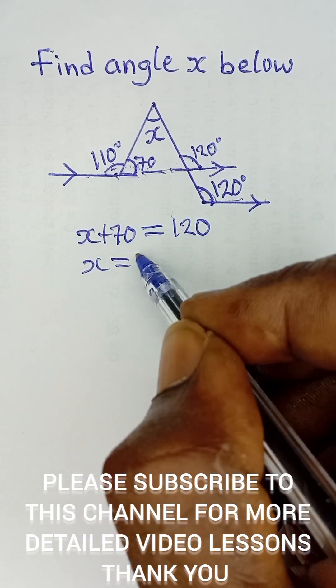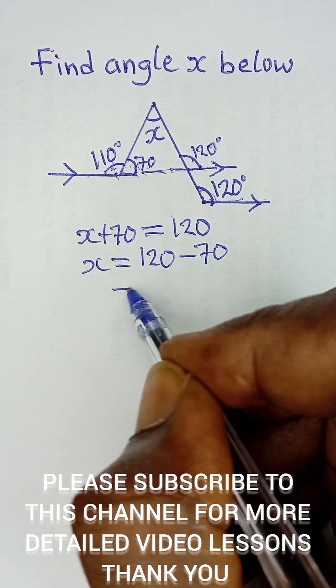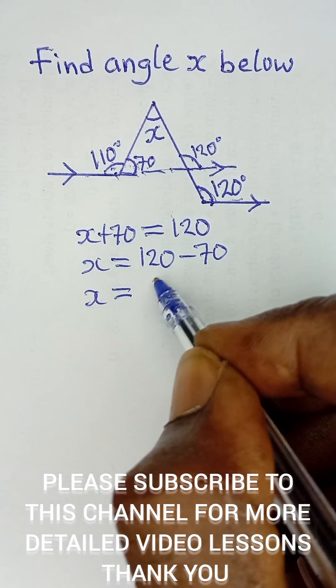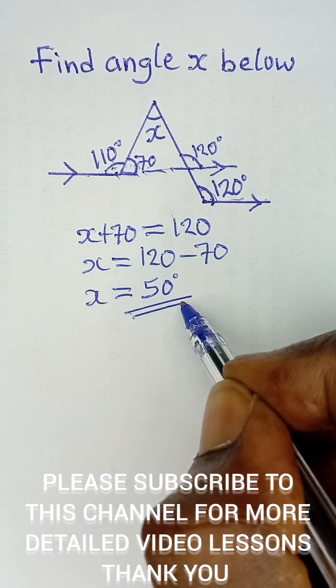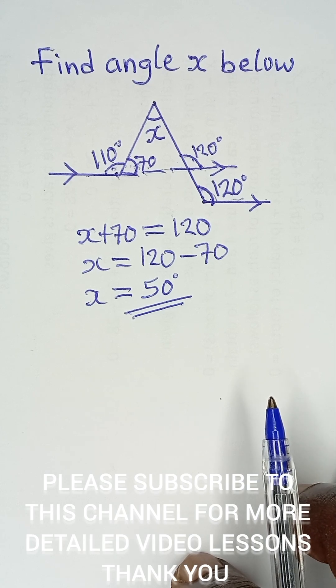So x equals 120 minus 70, which gives us the value of x as 50 degrees. That is the final answer. Please subscribe to this channel for more videos like this. Thank you.